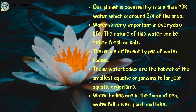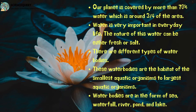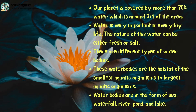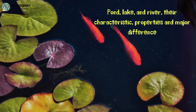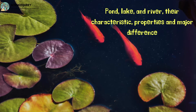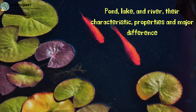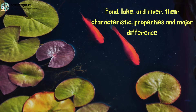Our planet is covered by more than 70% water, which is around 3/4th of the area. Water is very important in everyday life. The nature of this water can be either fresh or salt. There are different types of water bodies, which are the habitat of smallest to largest aquatic organisms. Water bodies are in the form of sea, waterfall, river, pond and lake. Now let us see what is a pond, lake and a river, their characteristics, properties and major differences.